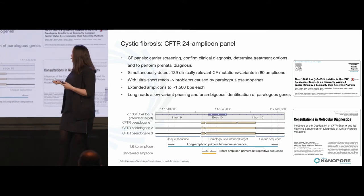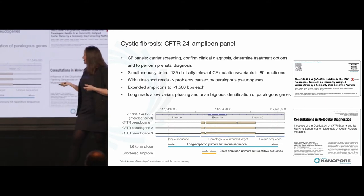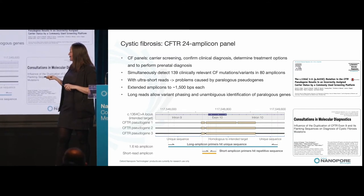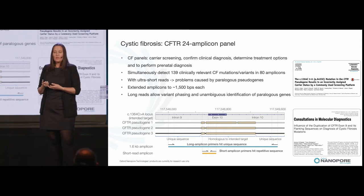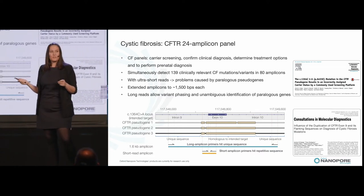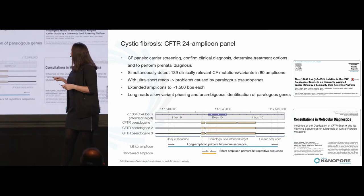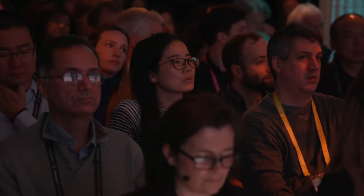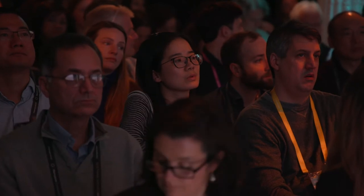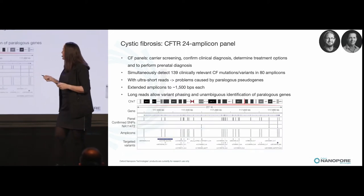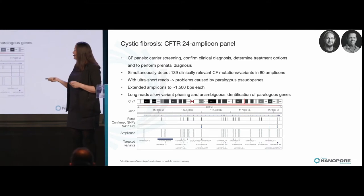What we've known, and what's been shown many times in literature, is that when you have these ultra-short reads, you end up having trouble with paralogous pseudogenes. In this specific example, around exon 10, the reads also map to three different pseudogenes, which muddies the results. So what we did is expand all the amplicons to 1,500 bases instead of the ultra-short reads, so we're then able to map uniquely to the parts of the genome. Instead of 80 amplicons, we have 24. We tried this on a sample with known SNPs, multiplexed the PCR in one reaction, and ran it on a MinION.